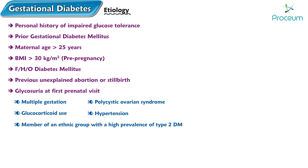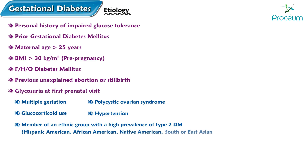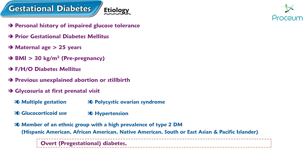Being part of certain ethnic groups, including Hispanic American, African American, Native American, South or East Asian, and Pacific Islander, can also increase the risk of developing gestational diabetes. Suspect overt or pre-gestational diabetes if glucose intolerance manifests earlier in pregnancy.